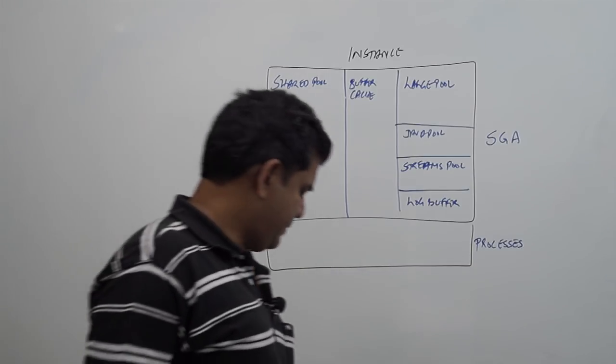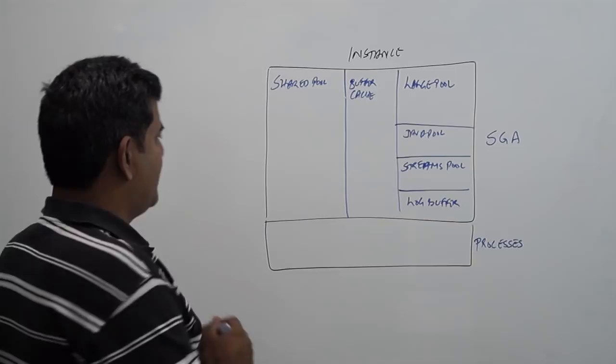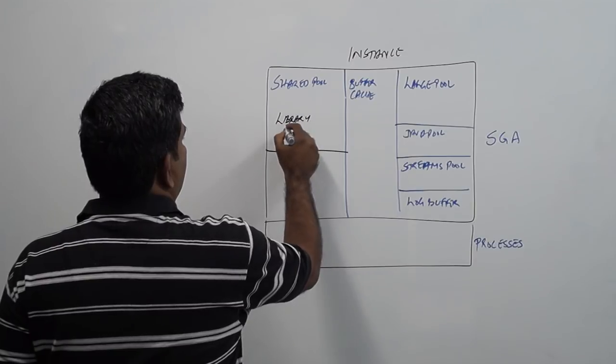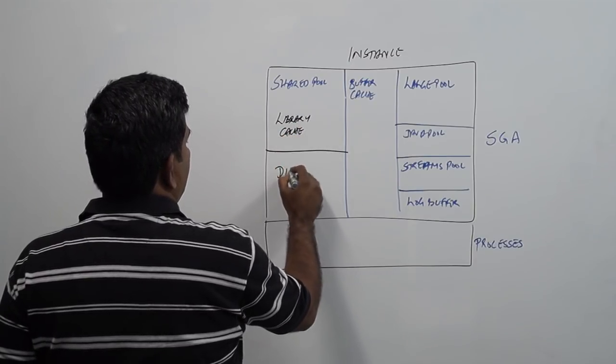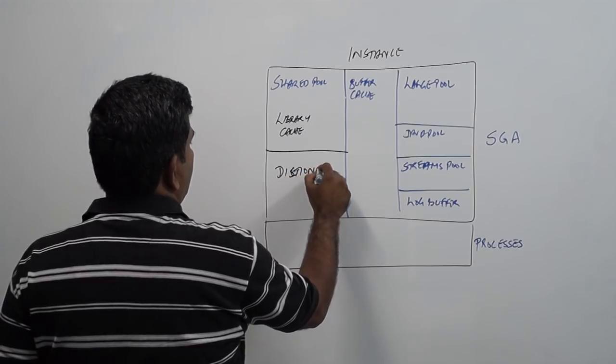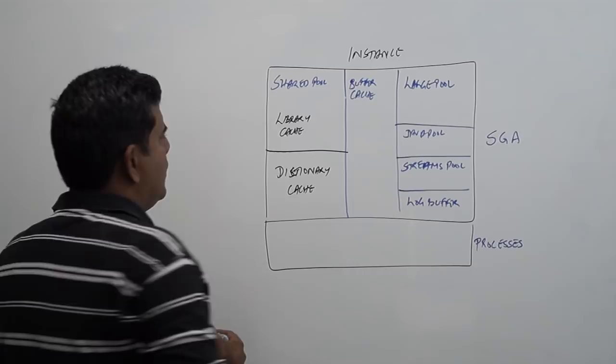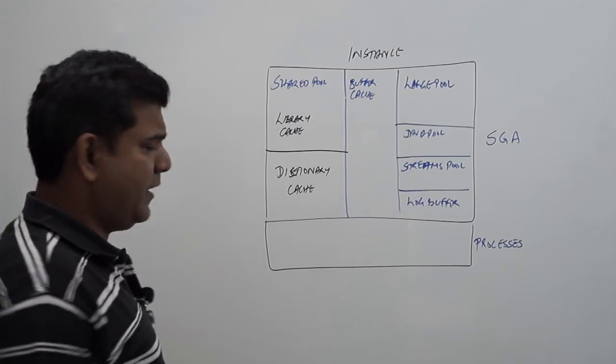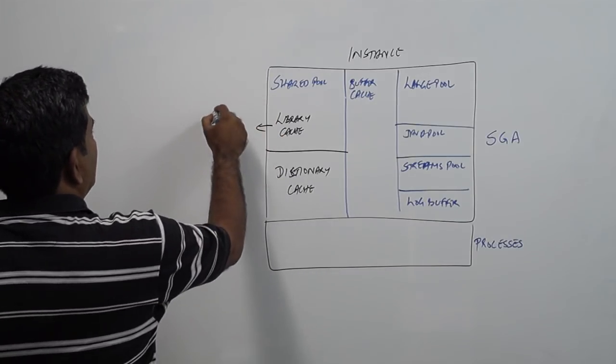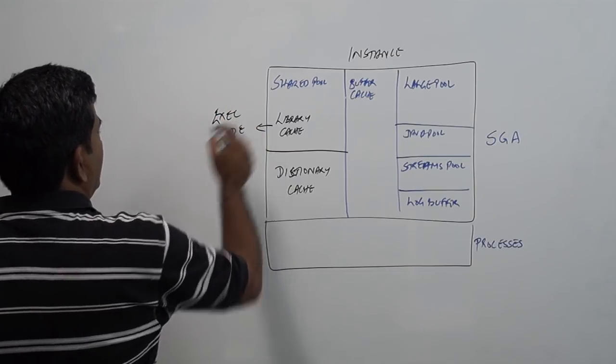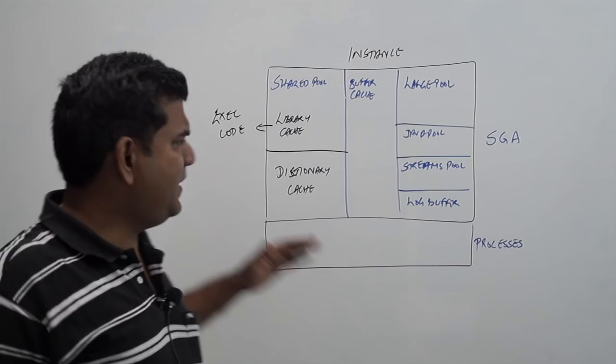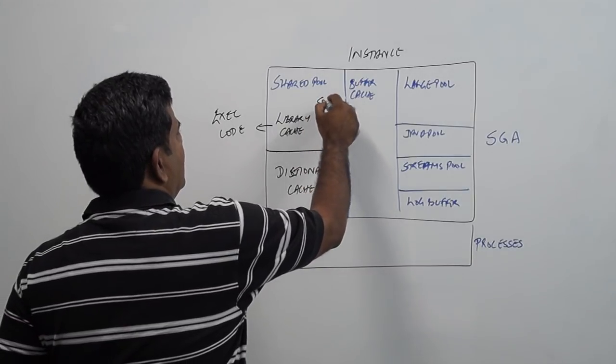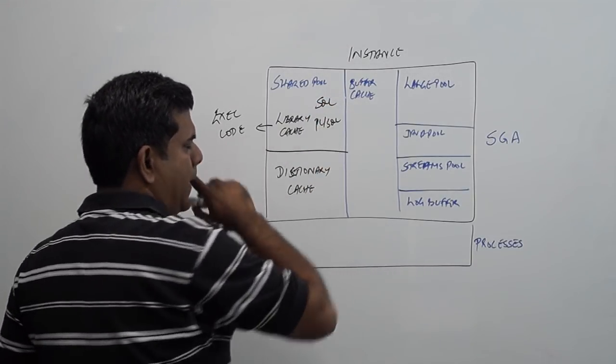The shared pool consists again of two components called as the library cache and the dictionary cache. What is there inside the library cache? All executable code called by any session that is connected to the instance is kept in the library cache. It could be SQL or PL SQL.